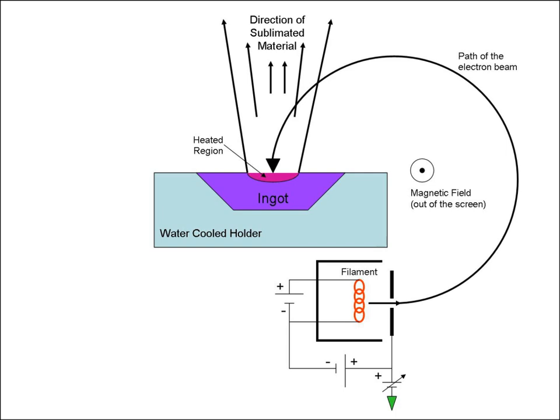Upon striking the evaporation material, the electrons will lose their energy very rapidly. The kinetic energy of the electrons is converted into other forms of energy through interactions with the evaporation material. The thermal energy that is produced heats up the evaporation material causing it to melt or sublimate.